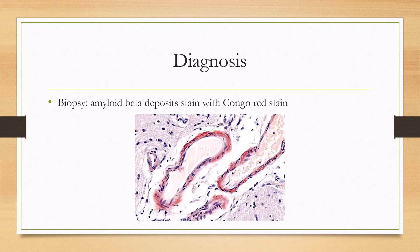What will you see on biopsy? There will be amyloid beta deposits that stain with Congo red stain. Remember, this affects the blood vessels, so you'll see the deposits there.